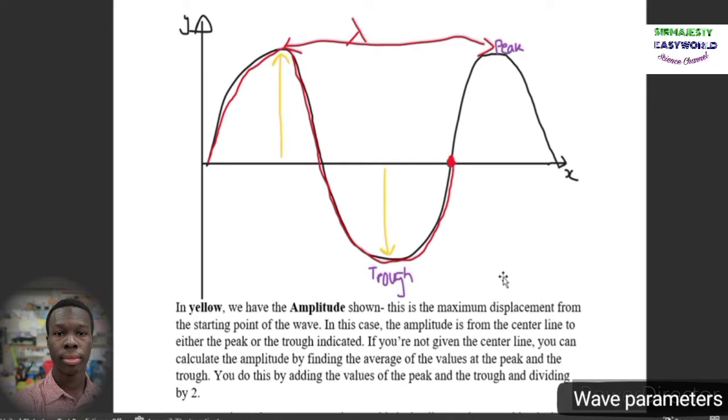In some cases you may not be given the center line, so you can also find the amplitude by adding the values of the peaks and troughs and dividing that by two, a simple average.